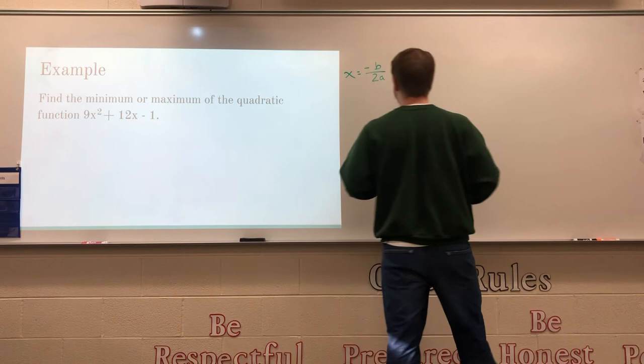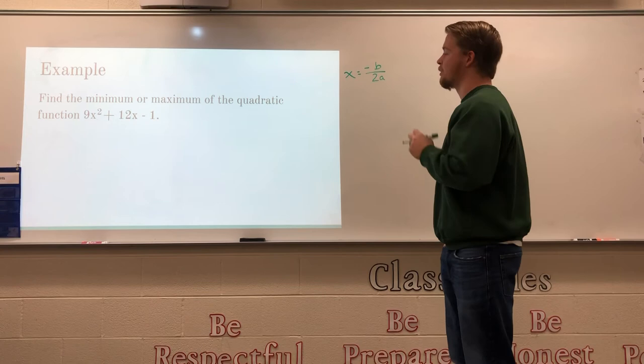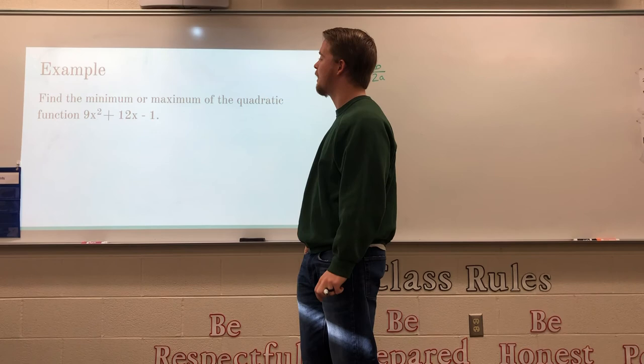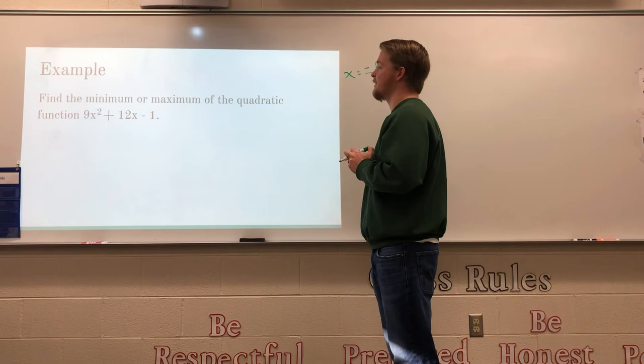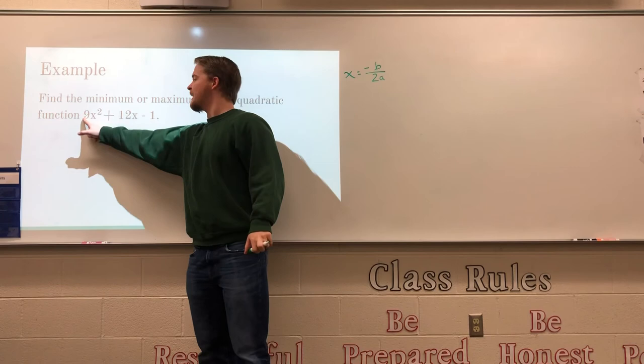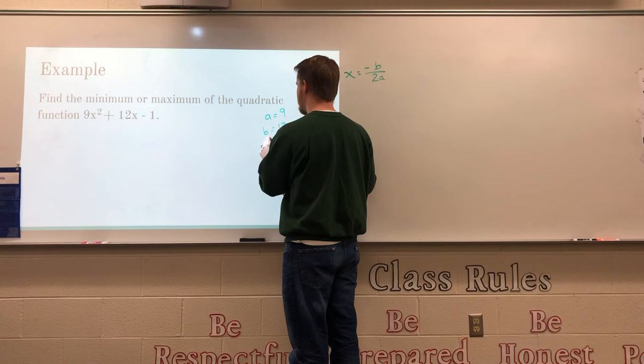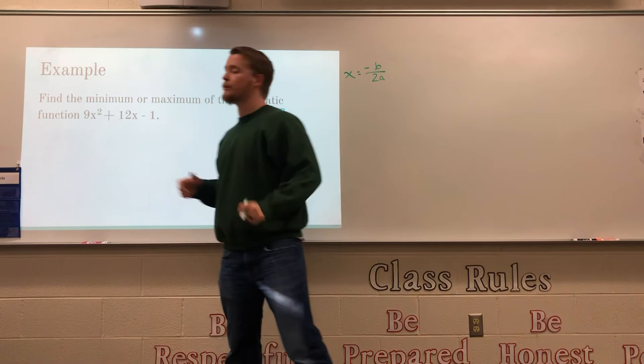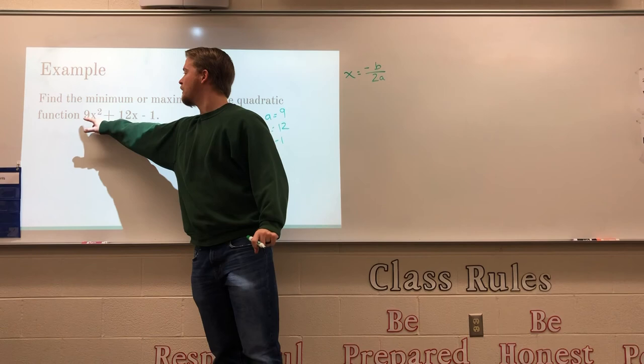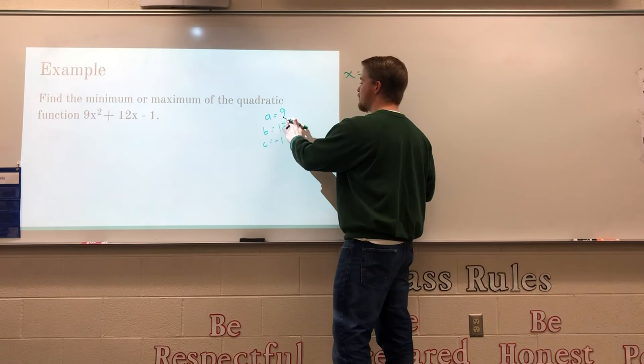Now let's find the minimum or maximum of the quadratic function 9x squared plus 12x minus 1. First, look at the a value. You can list these out: a equals 9, b equals 12, and c equals negative 1. Whether a is positive or negative tells you if the parabola opens upward or downward. Since a equals 9, which is positive, this parabola opens upward.